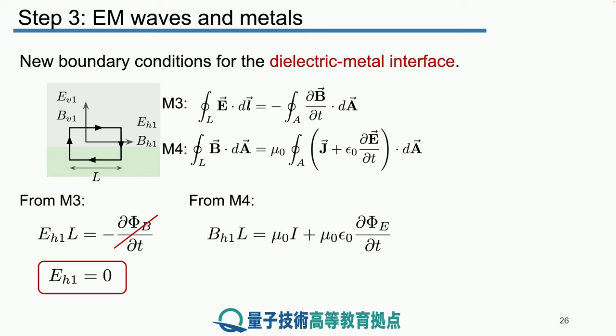And from Maxwell's fourth equation, we get the following. We get that B_H1 times L. Again, we only get the horizontal contribution from the magnetic field because it points in the same direction as the line segment that we are considering, must be equal to mu naught times I, the current, plus mu naught times epsilon naught times the change in the electric flux. And again, by shrinking the loop on the sides and turning it into a line, we make this flux through the area disappear because the area goes to zero. In other words, the horizontal component of the magnetic field is given by this. It's mu naught times J_L, where this J_L is really just the current per unit length.